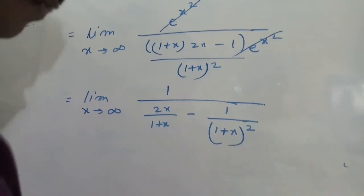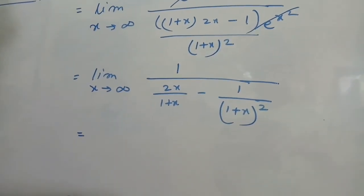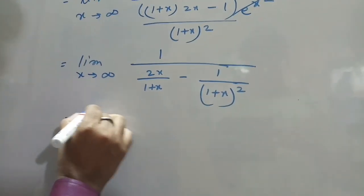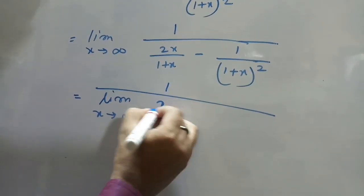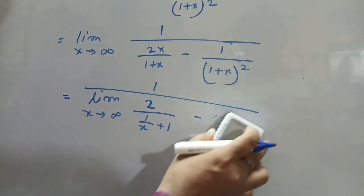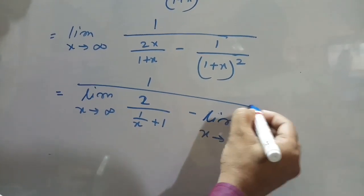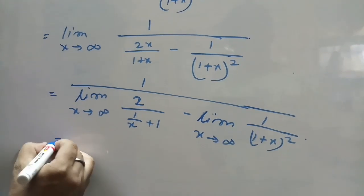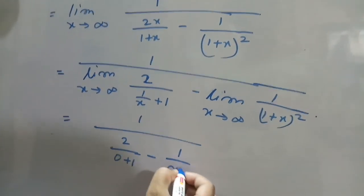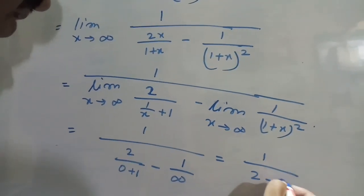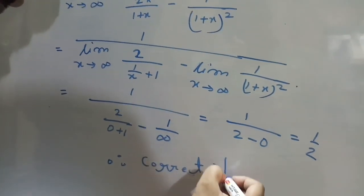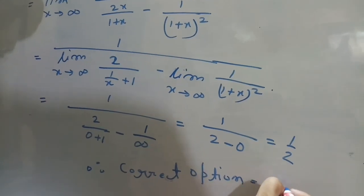This limit equals the limit as x tends to infinity of 1 / [2 · (1/(1/x + 1))] minus the limit of 1 / (1 + x)². As x tends to infinity, this becomes 1 / (2 · (0 + 1)) minus 1/infinity, which equals 1/2 minus 0, that is one-half. Therefore, the correct option is option B.